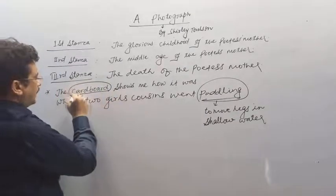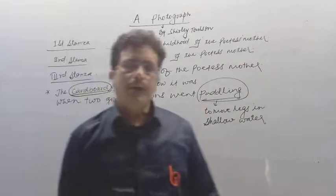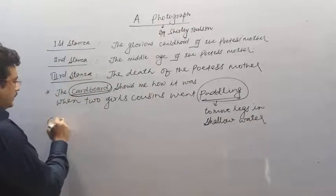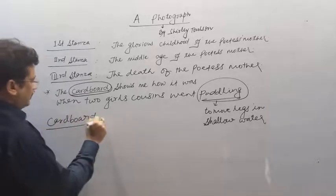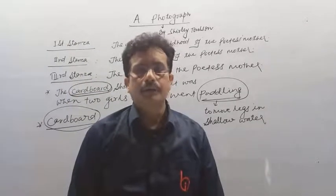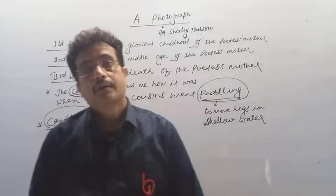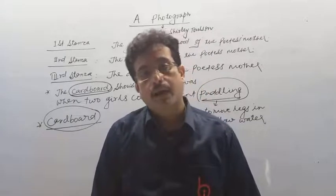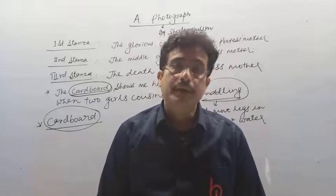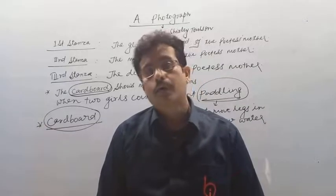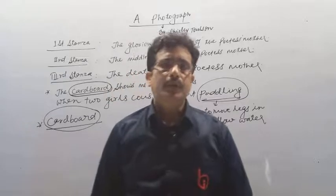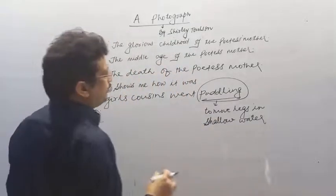Now the keyword in this line is 'cardboard.' इस line का keyword cardboard है। Poem में cardboard, photograph के लिए आया है। यहाँ से कितने सारे questions rise होंगे — जैसे: What do you mean by the word cardboard? What does the cardboard show? And why has the poetess used the word cardboard? तो simply cardboard, poem में photograph को denote कर रहा है।